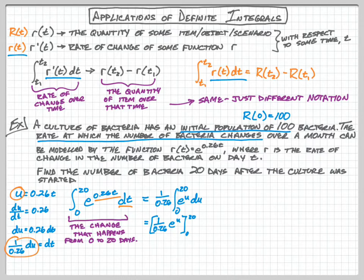But of course we have to substitute our u back in, so we just put that back in there. We're still going from 0 to 20. So now we know we're going to go r(20) minus r(0) using our fundamental theorem of calculus.